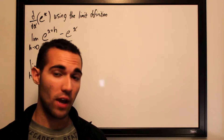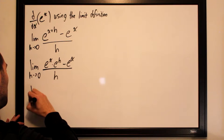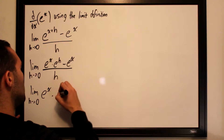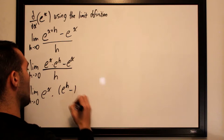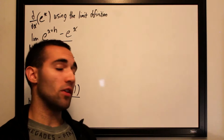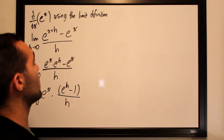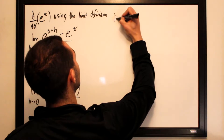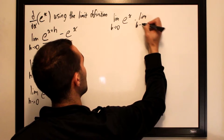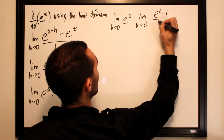We have a common factor that can be pulled out, so we can factor out an e to the x. This gives us the limit as h approaches 0 for e to the x times the quantity e to the h minus 1, over h. Since the limit of a product is the product of the limits, we can split this into two separate limits: the limit as h approaches 0 for e to the x, times the limit as h approaches 0 for e to the h minus 1 over h.